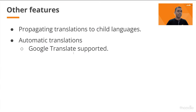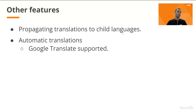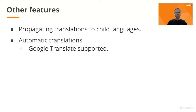Andrew mentioned the concept of parent and child languages. The design allows that if content is translated in a parent language, its translation can also be used in child languages. For example, if something is translated in French, any user on Canadian French will also see those translations. If someone updates the Canadian French translation specifically, that one is used; otherwise, the system falls back to the parent French translation. Google Translate is supported at the moment for automatic translations, though as Andrew discussed, there are notable issues to keep in mind.